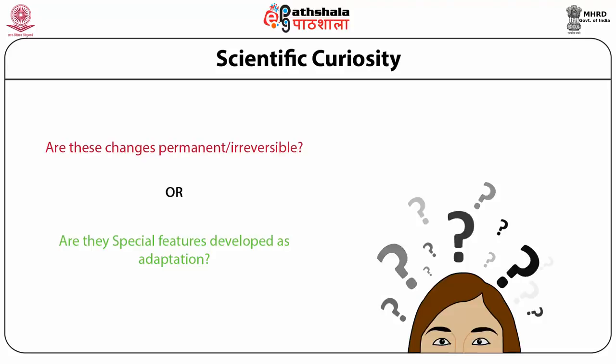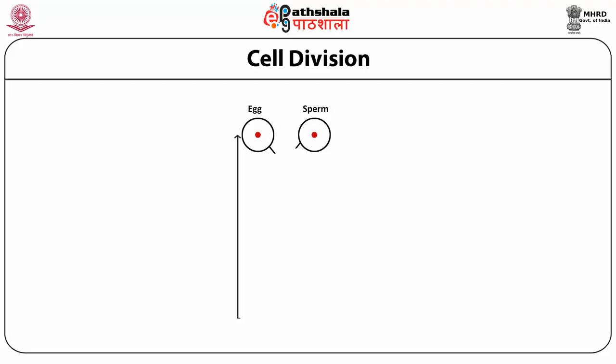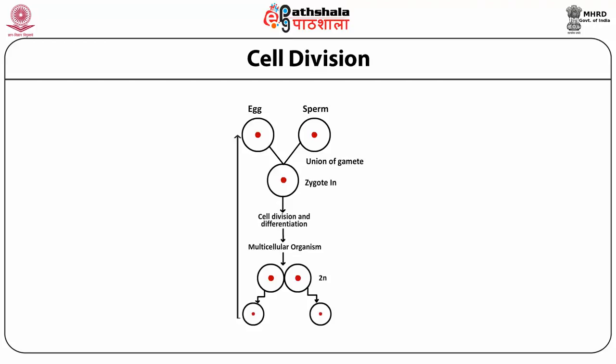Now coming to how we all start our life — in sexual reproduction it is through the mating of male and female gamete, which forms the zygote. Each gamete has half the number of chromosomes that the adult organism has, and when the zygote is formed it has the same number of chromosomes as either of the parents. That is maintained through two kinds of divisions: mitosis, where the chromosome number remains the same, and meiosis, where the chromosome number is reduced to half.